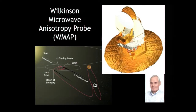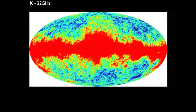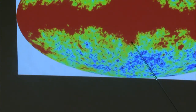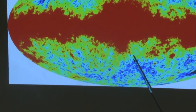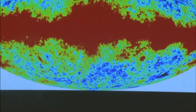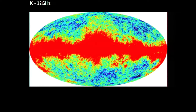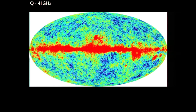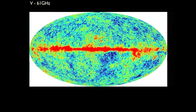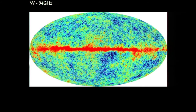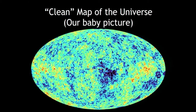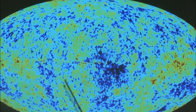With the Wilkinson Microwave Anisotropy Probe, we improved the resolution by an order of magnitude and sensitivity, and you can start to see fluctuations on much smaller scales. We took measurements at five frequencies, because the foregrounds are frequency dependent. This allows us to remove them and make a clean map of the sky. This is the universe's baby picture — this is what the fluctuations look like. What we want to do is characterize the statistical properties of these fluctuations.